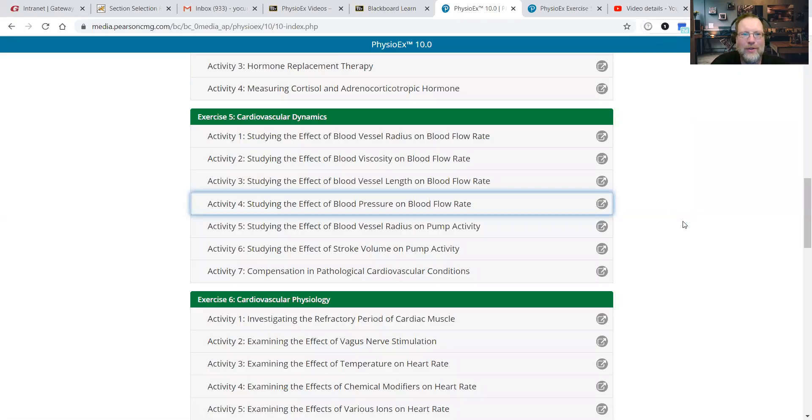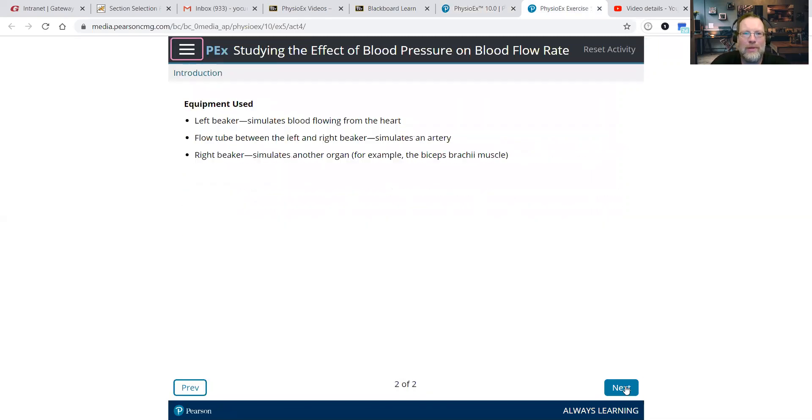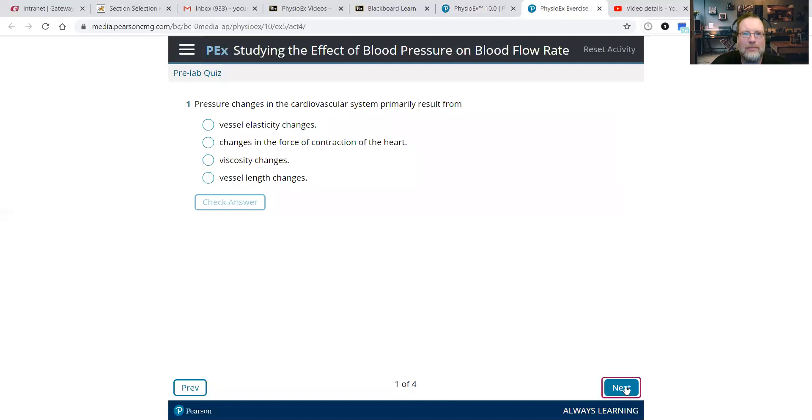Okay, we're going to continue with Exercise 5 in PhysioX10, looking at cardiovascular dynamics. In Activity 4, we're going to view a couple of experiments on blood pressure and flow rate. So we've looked at radius, viscosity, length, and now blood pressure. You can safely assume that those other three are going to be the constants in this particular activity.